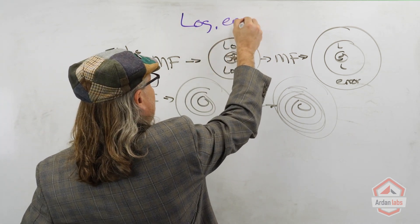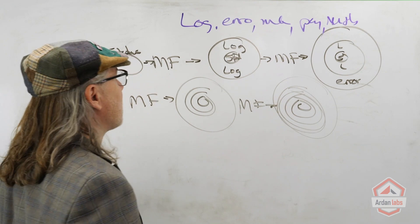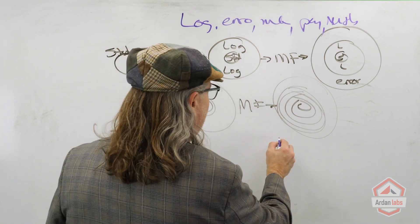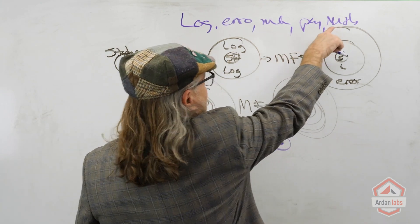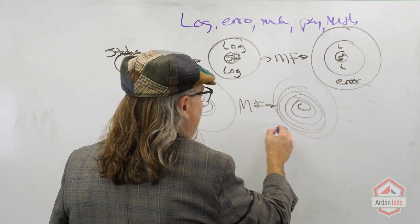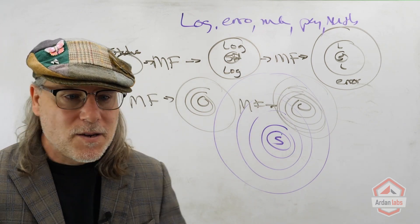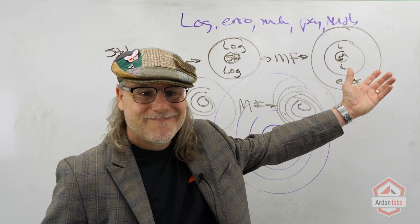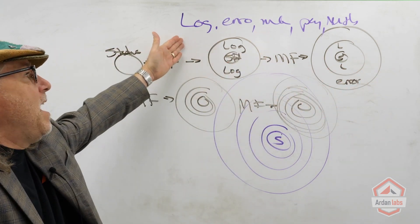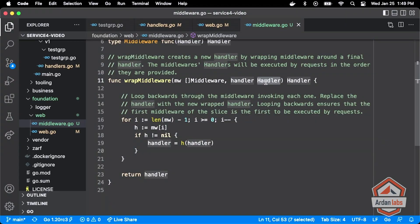Errors, metrics, panics, auth — and then the middleware function says, okay, given status, we're going to wrap this onion. This should be the outer layer. We're looking at the onion from outer layer in, so we have to walk the array in reverse order to build it out the way we see it visually. The outermost layer has to be wrapped last, and that's why we walk the slice in reverse order.